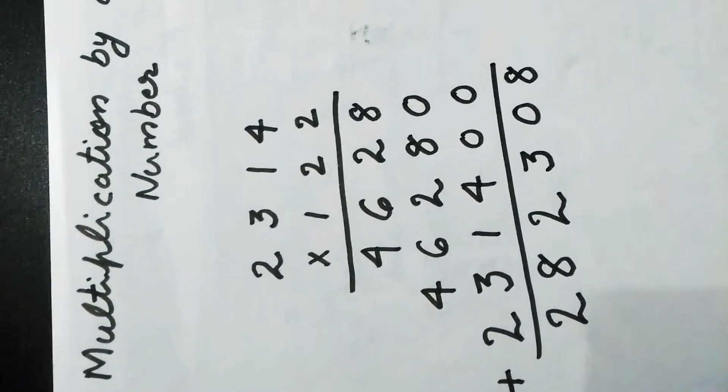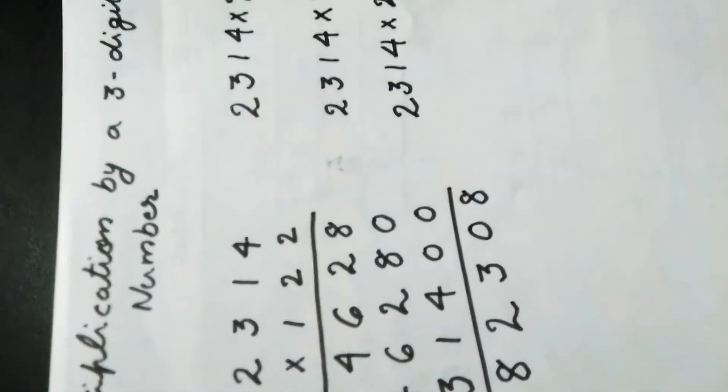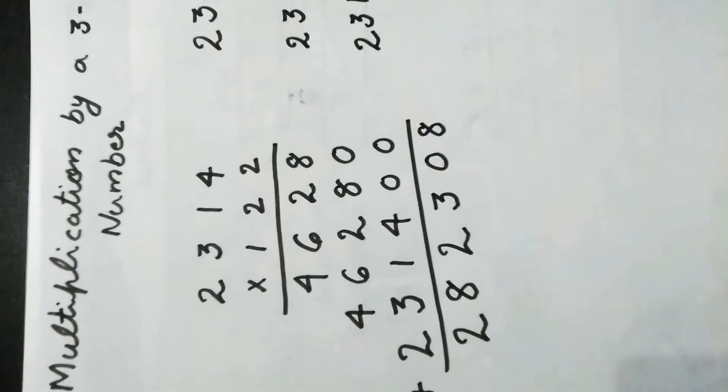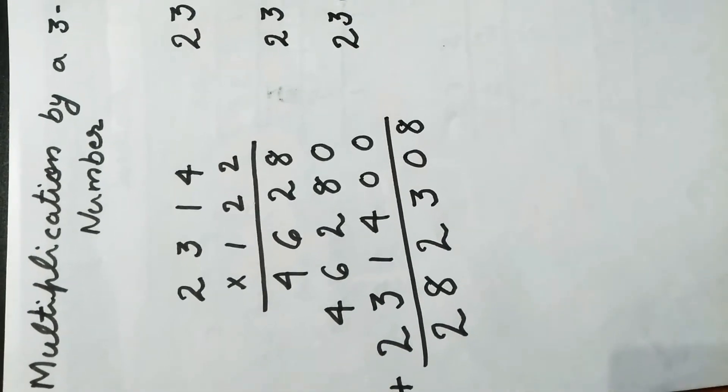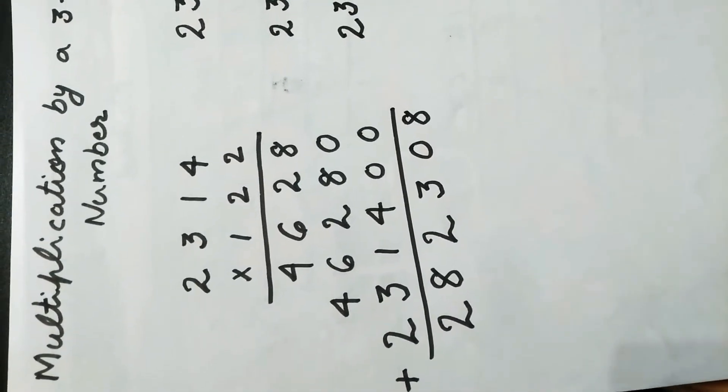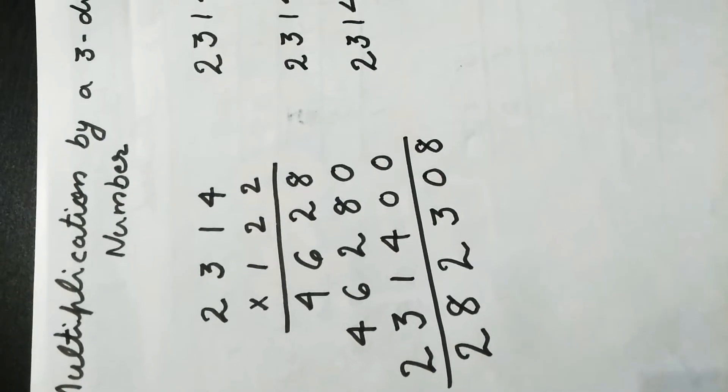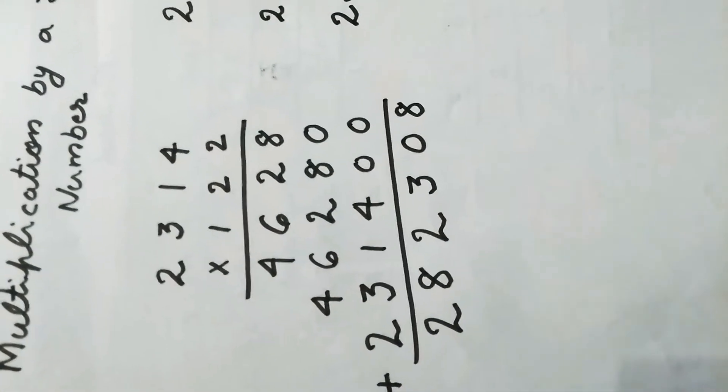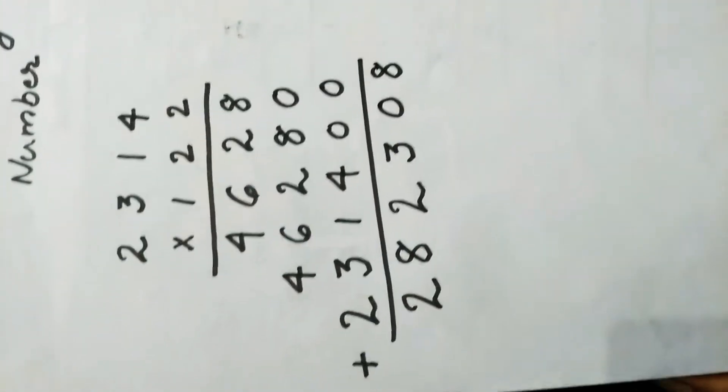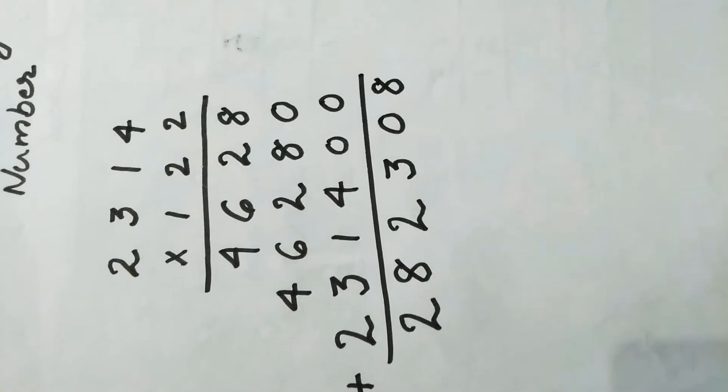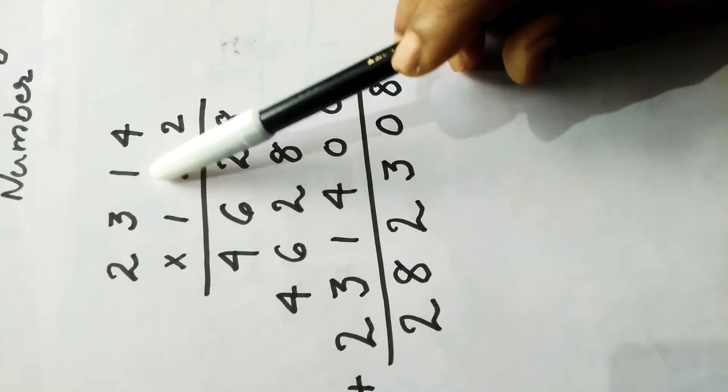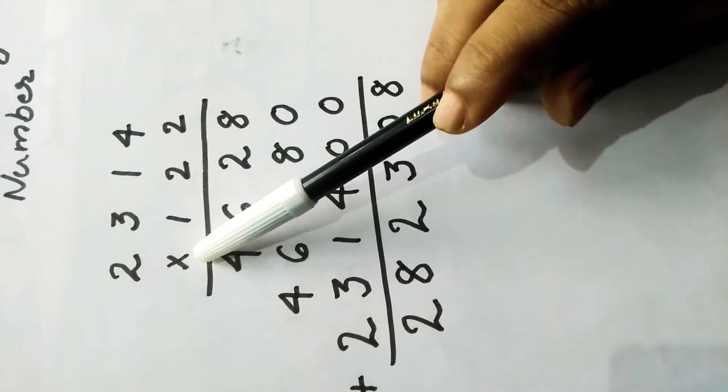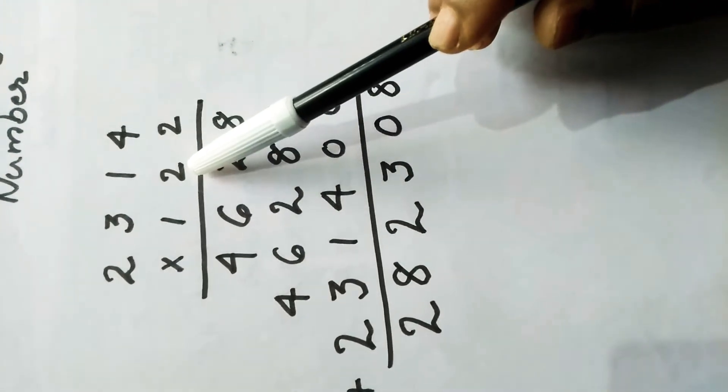Today we will learn about multiplication by a three-digit number. The last two days we have learned multiplication by a one-digit number and a two-digit number. Now listen, two numbers are given here: 2,314 multiplied by 122.